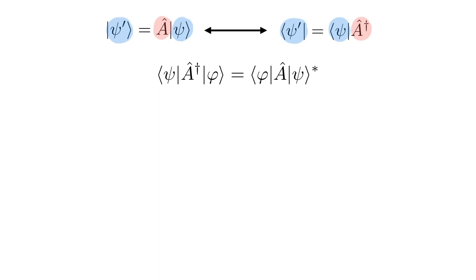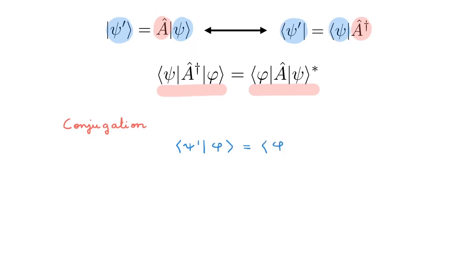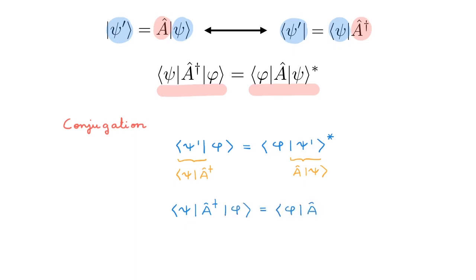The first thing we want to look at is how the matrix element of the adjoint operator is related to the matrix element of the original operator. All we need to prove this relation is to use conjugation of the scalar product — that means that the bracket ⟨ψ'|φ⟩ is equal to ⟨φ|ψ'⟩*. With the definition of the primed kets and bras above, we can write |ψ'⟩ as A|ψ⟩ and ⟨ψ'| as ⟨ψ|A†, and that's it — we've arrived at the relation: ⟨ψ|A†|φ⟩ = ⟨φ|A|ψ⟩*.